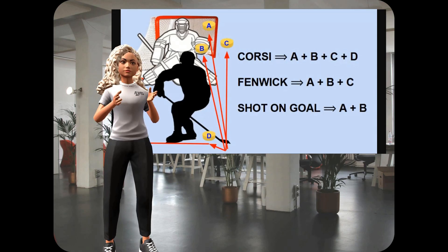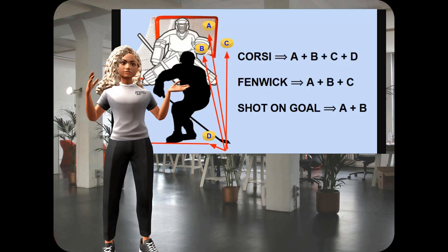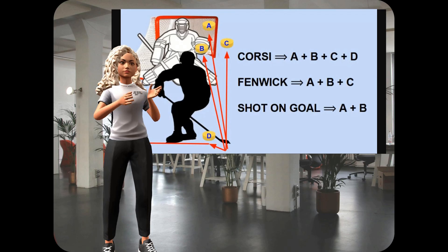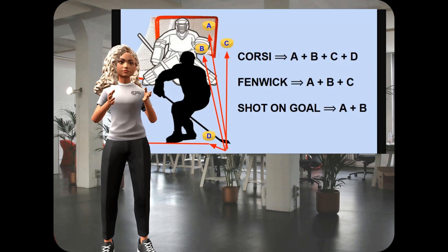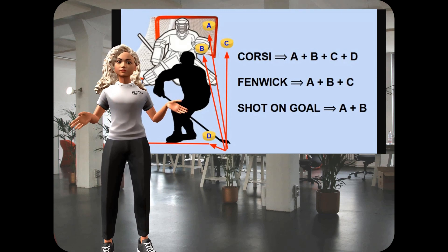Obviously, we want the Corsi and Fenwick numbers to be as close as possible to the shots on goal, and whether or not a team is effective in the offensive zone, has to do with what percentage of their shot attempts turn into actual shots on goal. So, just for a quick example of this, the best place to get statistics like Corsi, Fenwick, shots on goal, is on natural stat trick.